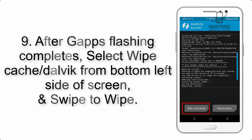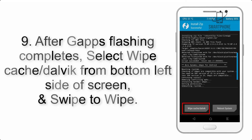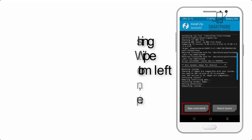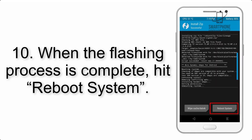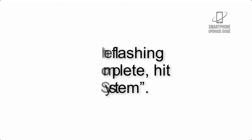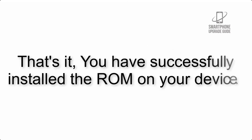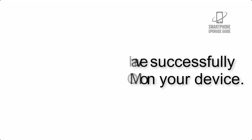Step 9: After GApps flashing completes, select Wipe Cache and Dalvik from the bottom left side of the screen and swipe to wipe. Step 10: When the flashing process is complete, hit Reboot System. That's it — you have successfully installed the ROM on your device.